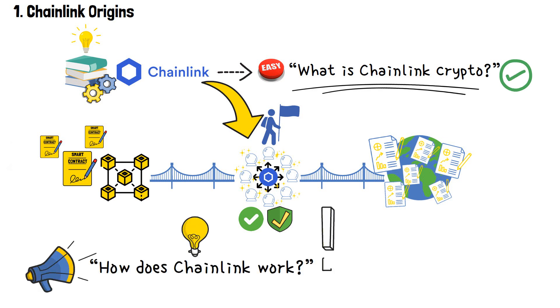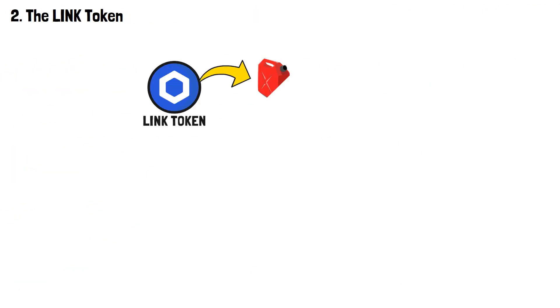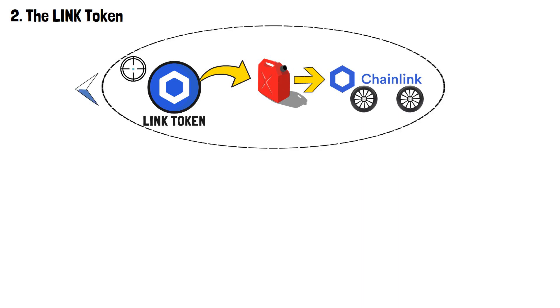But to understand this, it's vital to introduce a new variable in the Chainlink equation. It's the LINK token, the backbone of Chainlink's architecture. LINK tokens are the gas on which Chainlink runs. LINK holds a pivotal role within the Chainlink ecosystem, simultaneously serving as both a utility and a governance token. In terms of utility,